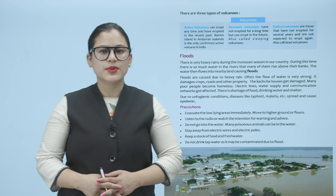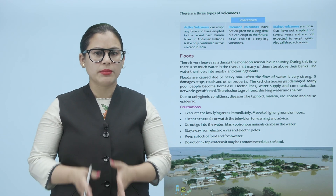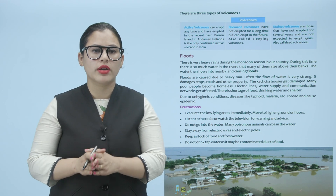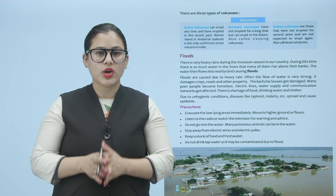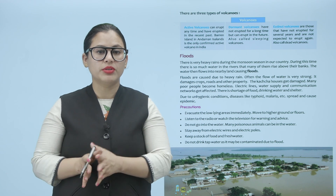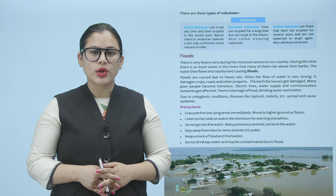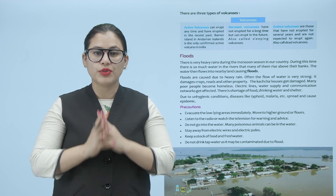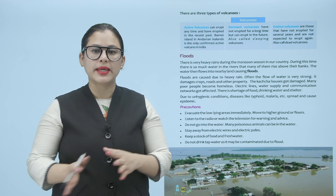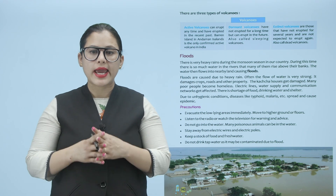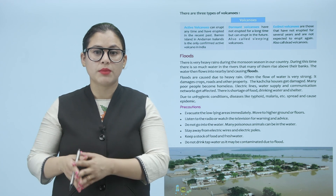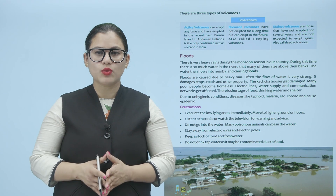There are three types of volcanoes. Active volcanoes can erupt anytime and have erupted in the recent past — Barren Island in the Andaman Islands is the only confirmed active volcano in India. Dormant volcanoes have not erupted for a long time but can erupt in the future — these are also called sleeping volcanoes.